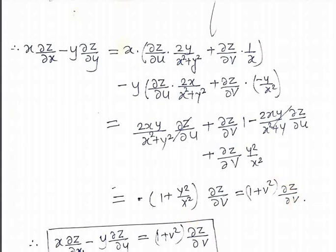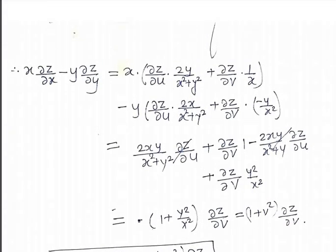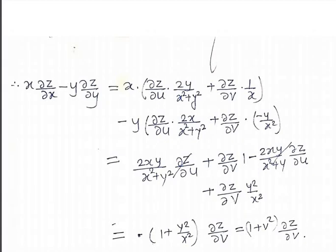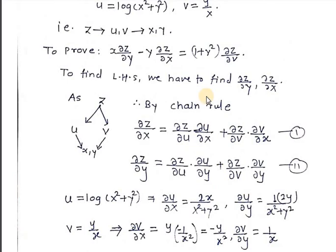Therefore, the value of the expression x ∂z/∂y minus y ∂z/∂x equals 1 plus v square times ∂z/∂v. In this way, once we understand that the function is a composite function, we can easily solve such examples.